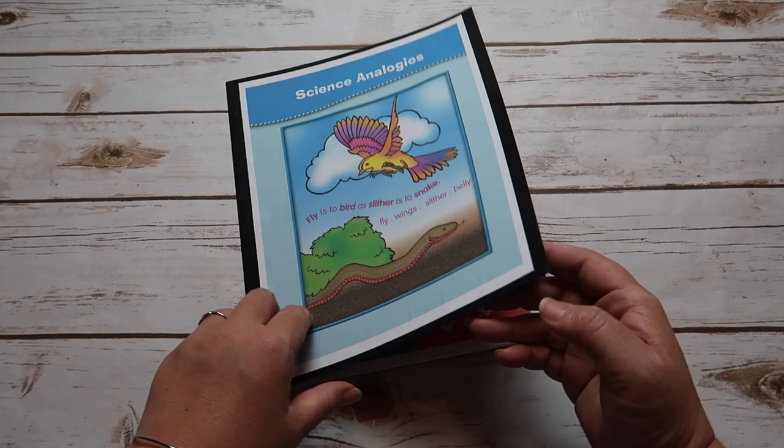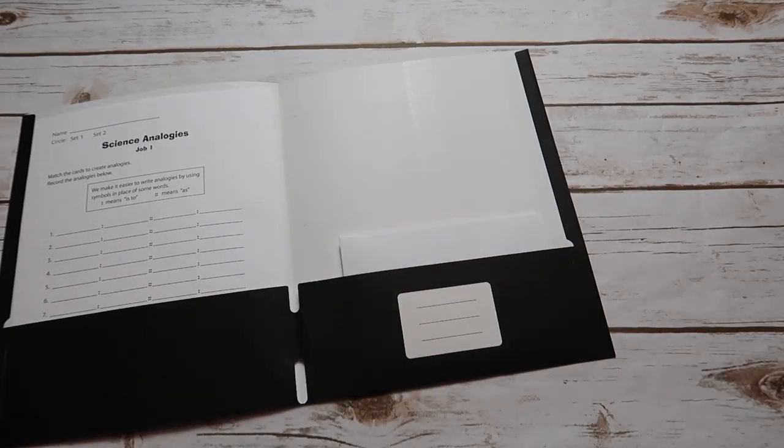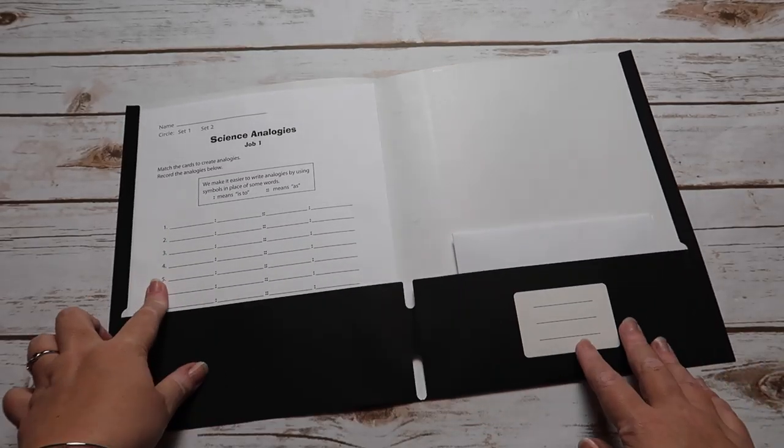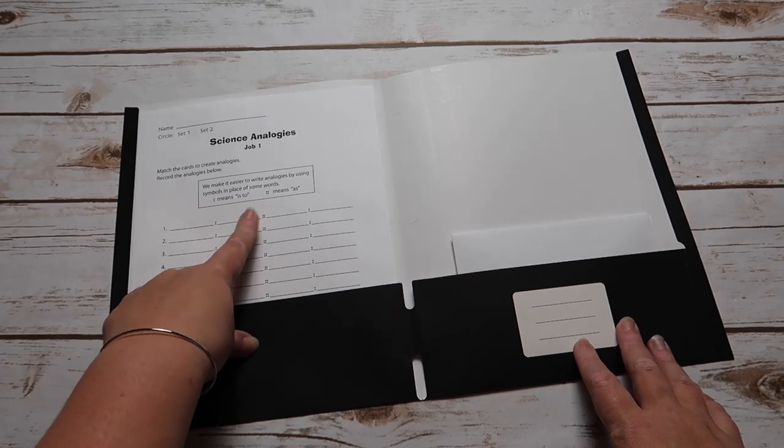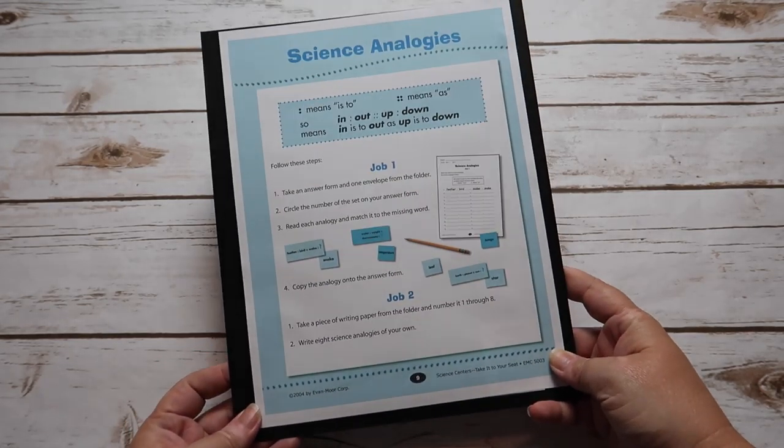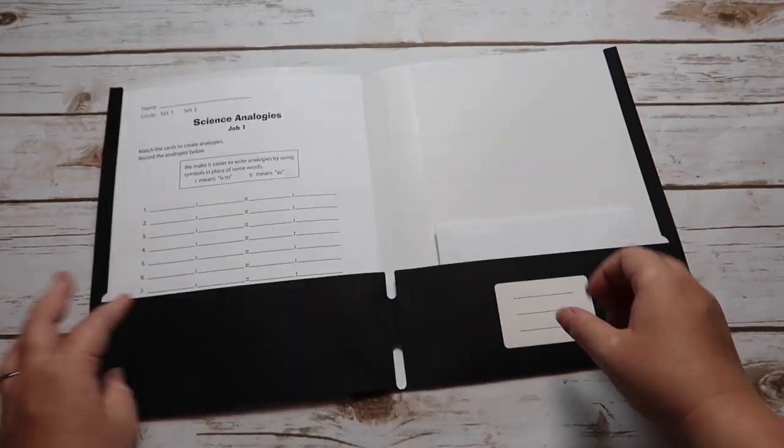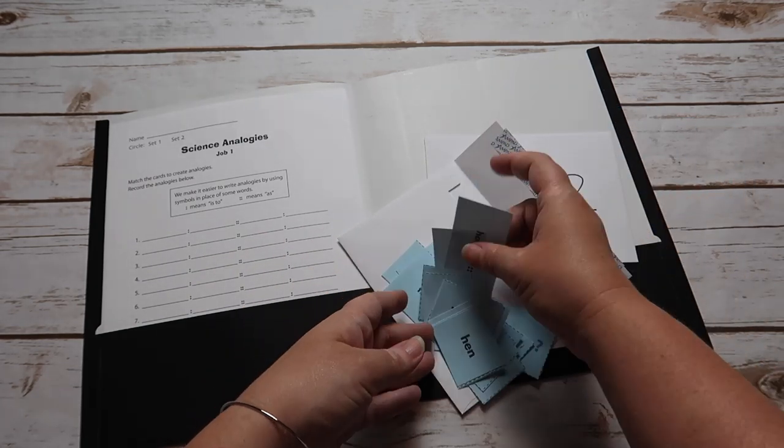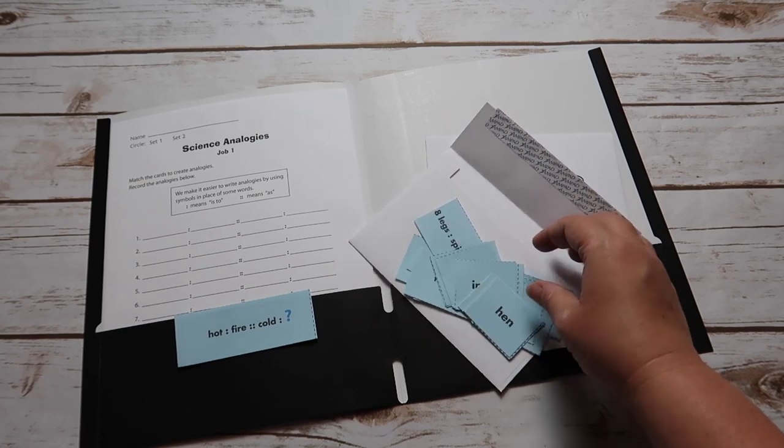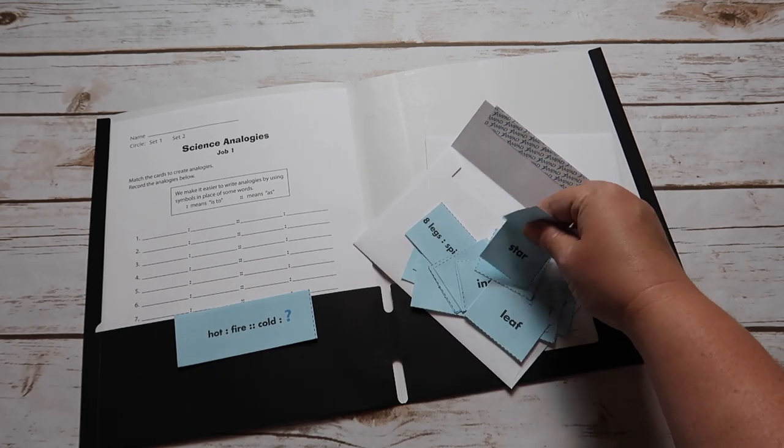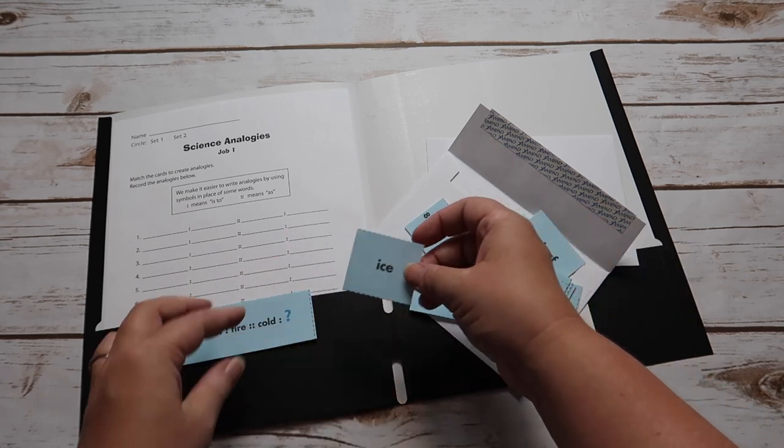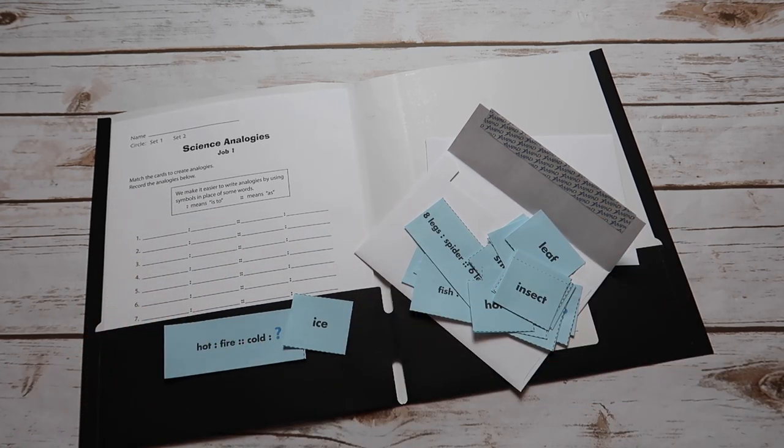And last but not least, we have science analogies. Which is from the science centers. Which is grade three and four. Here's a look at those contents. So we have the science analogies over here. So it's blank to blank, as blank is to blank. Again, this is one that has the directions on the back. There's two different sets. So some have different differentiation, which is nice. So you would pull everything out of here. And you would read something like, hot is to fire, as cold is to. Then you're going to find the word that goes with that. For that analogy. So let's see if we can find one. As cold is to ice. And once you match them all, you would just write them down on your recording sheet.